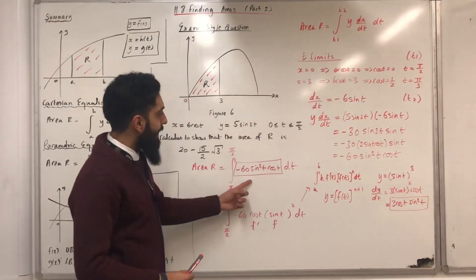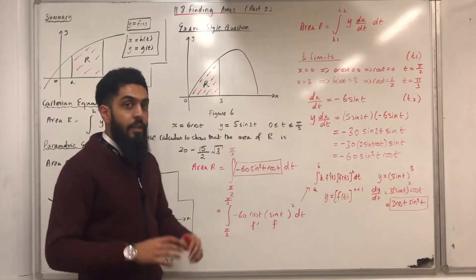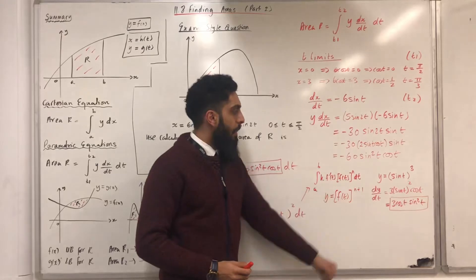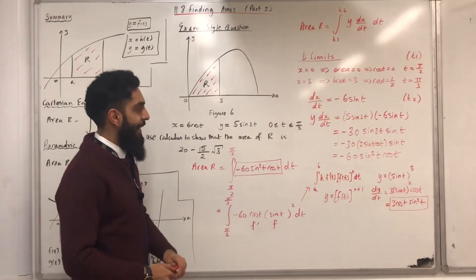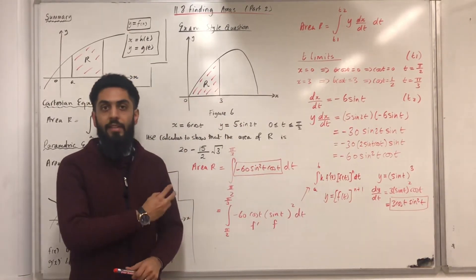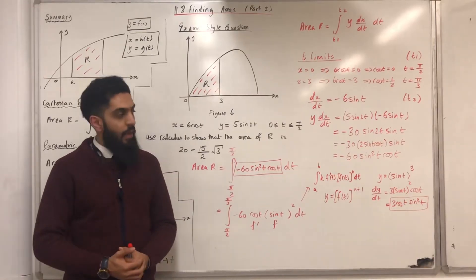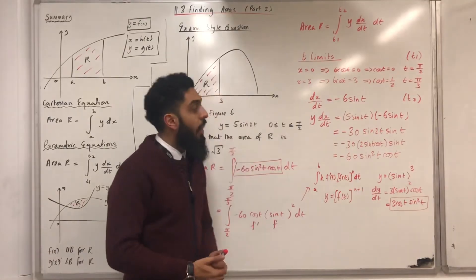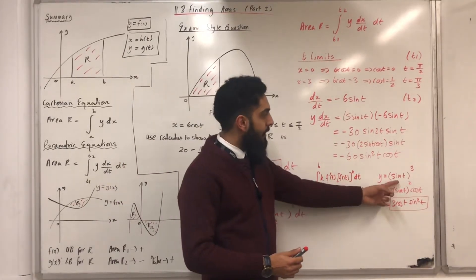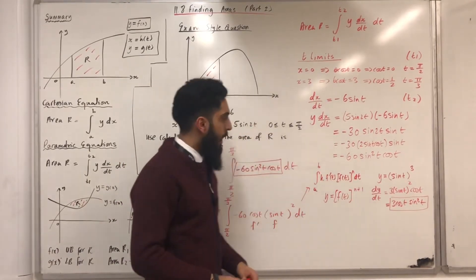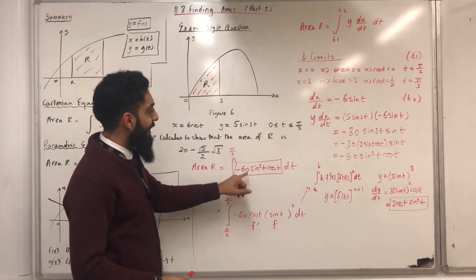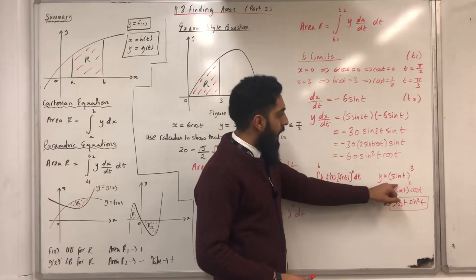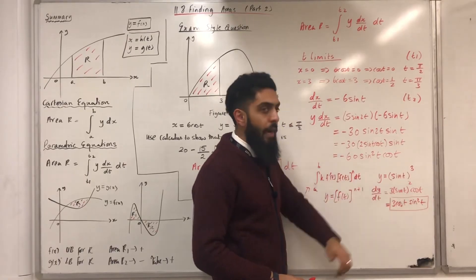The only difference between the two expressions is that over here, you've got 3, but over here, you've got minus 60. How do we go from 3 to minus 60? We can multiply by minus 20. And we also know that if we integrate 3 cos t sine squared t with respect to t, we get sin t in brackets to the power 3. Therefore, if we integrate minus 60 sine squared t cos t with respect to t, we get minus 20 in brackets sine t to the power 3.